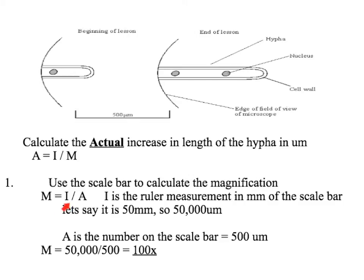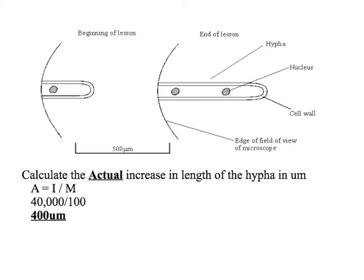Now for magnification — we've got the image. We need the actual size to work out magnification. Whatever is on the scale bar is the actual length of the scale bar, so the actual length in this case is 500 micrometres. So M = I over A: 50,000 divided by 500 gives times 100. So magnification is ×100. We've got our image size — it's grown by 40,000 micrometres — and our magnification of 100. So I over M: 40,000 divided by 100 is 400 micrometres. The actual length it's grown is 400 micrometres.